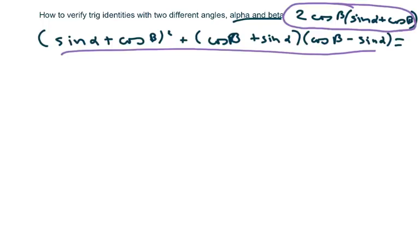So basically all I'm going to do is expand this and I get using your a plus b squared to get sine squared alpha plus 2 sine alpha cosine of beta plus cosine squared of beta.